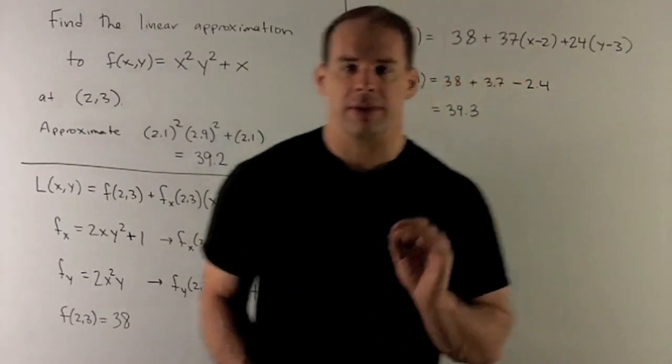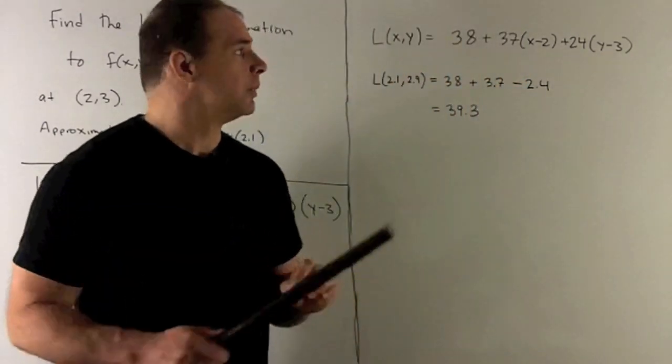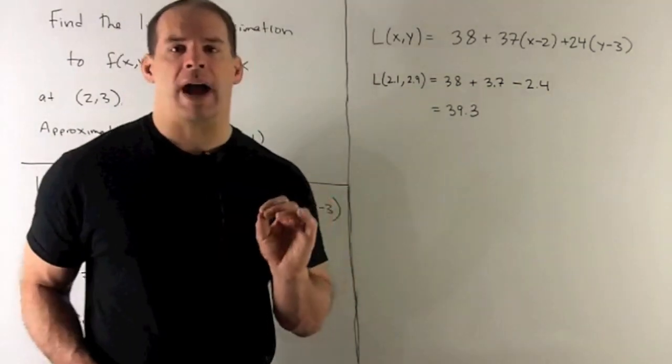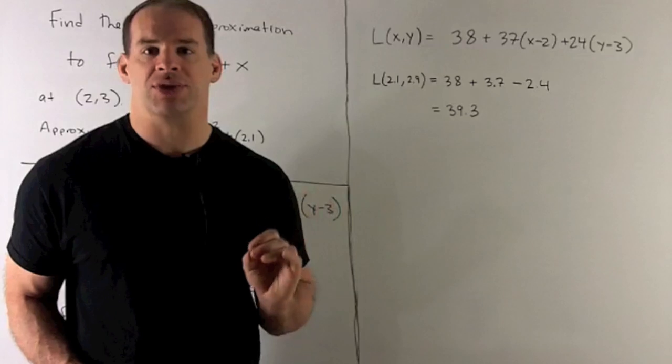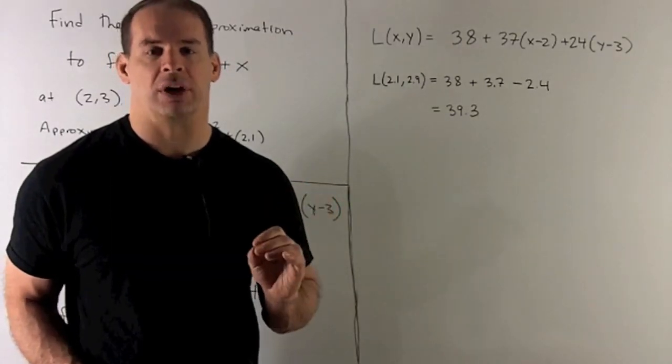So put everything into our equation. We're going to have L(x,y) = 38 + 37(x - 2) + 24(y - 3).